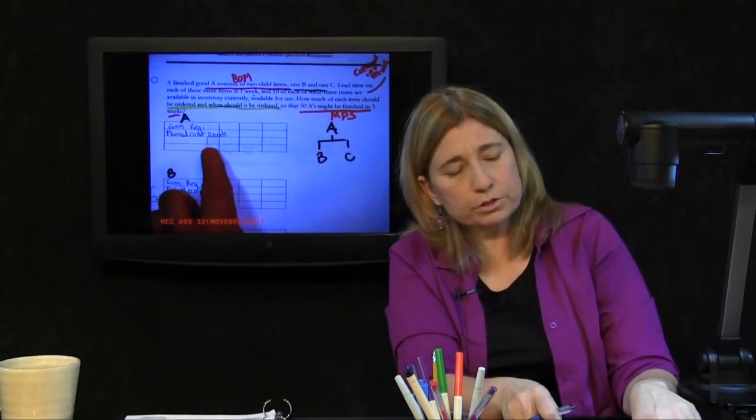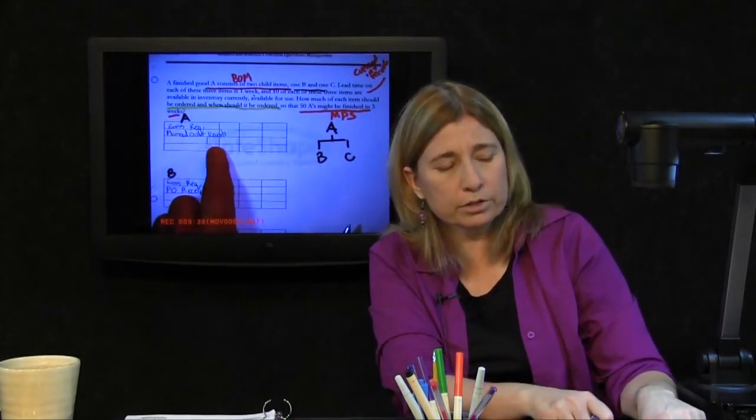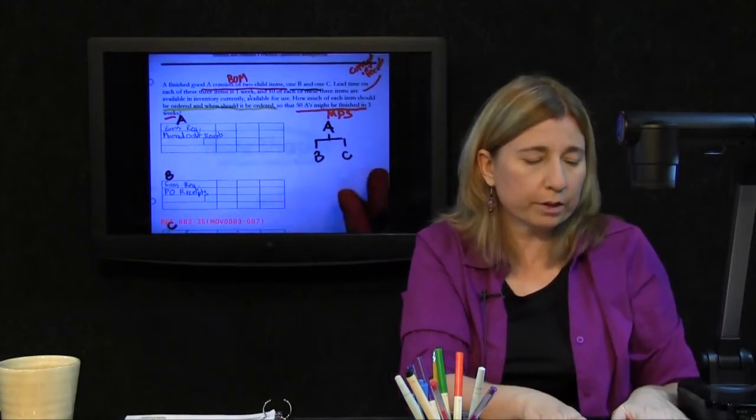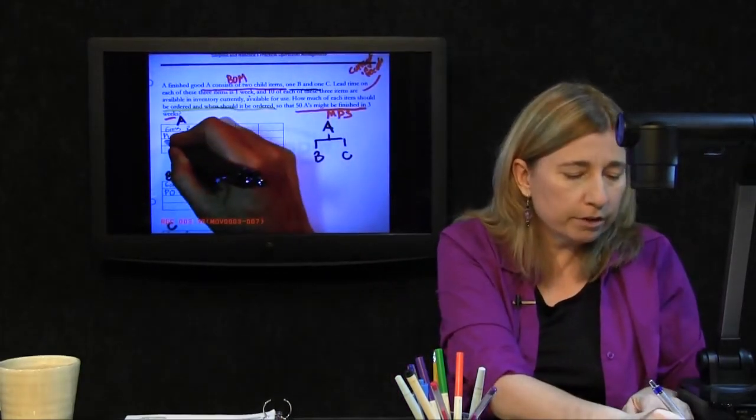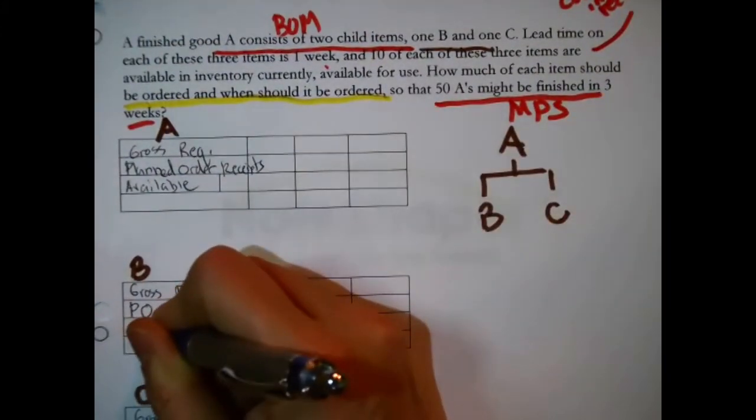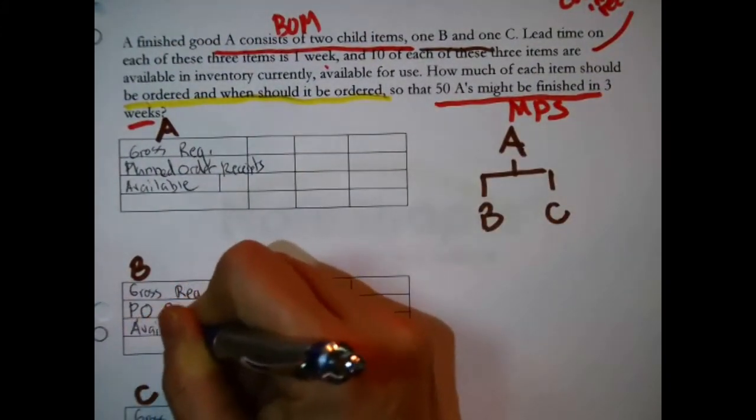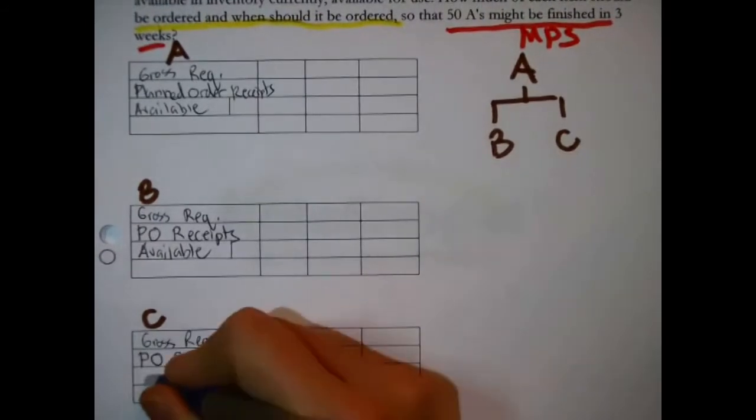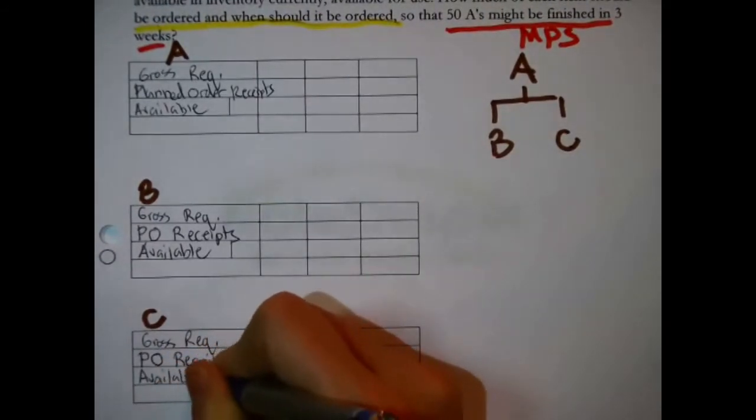The third line with the strange little box, extra box to the left of the planning periods. That's the available balance. I'm just going to write available. Stated as ending inventory, available at the end of that period.